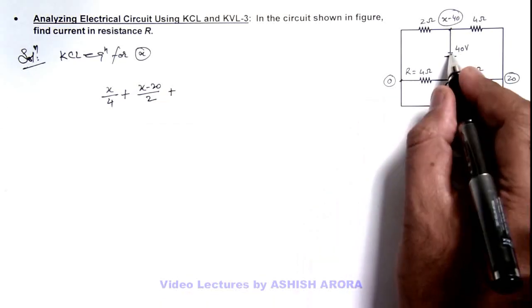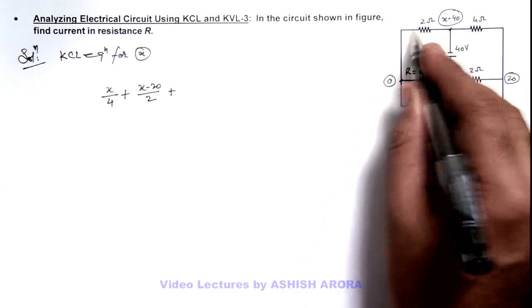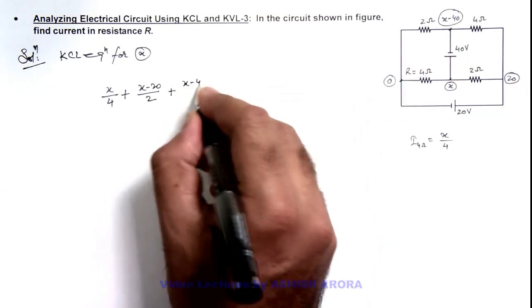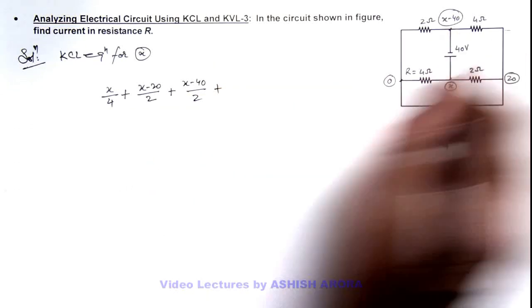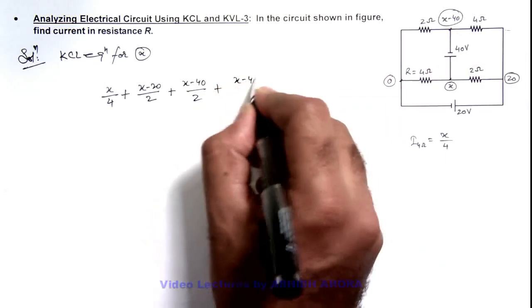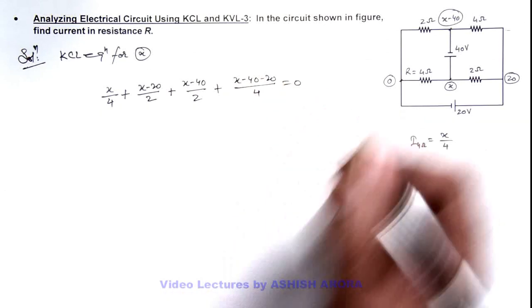Plus the current going in this direction is further divided in these two branches. Current going here will be x minus 40 minus zero by 2, plus the current going here is x minus 40 minus 20 divided by 4. That is equal to zero.